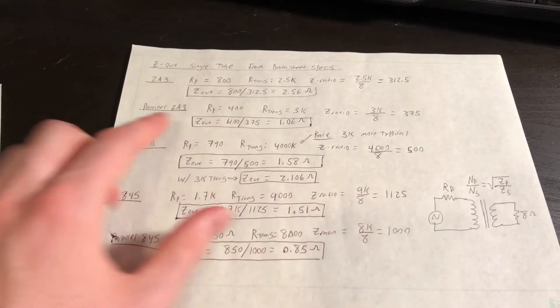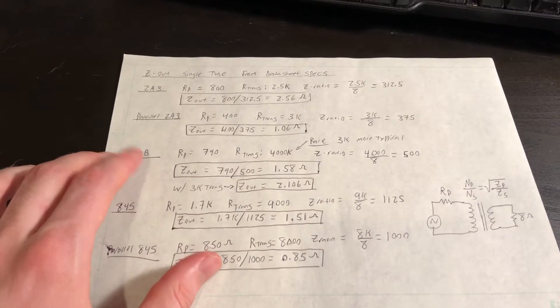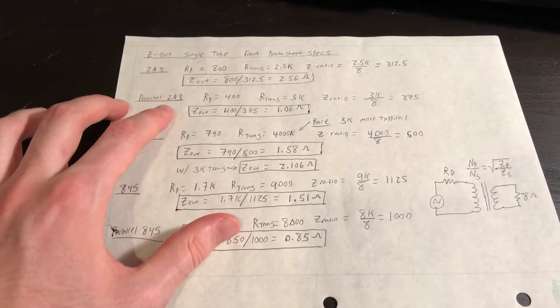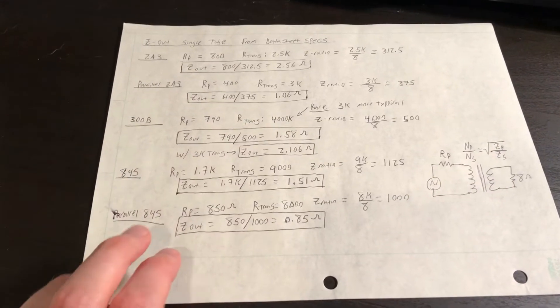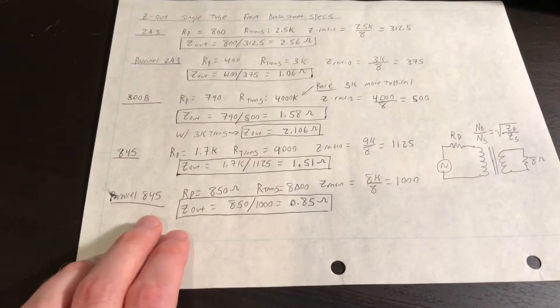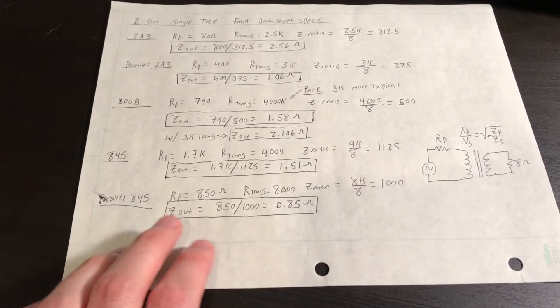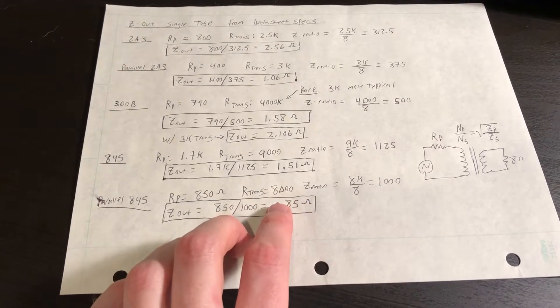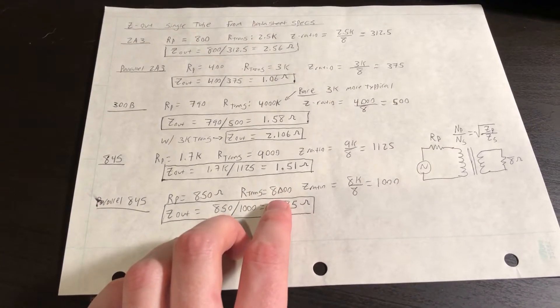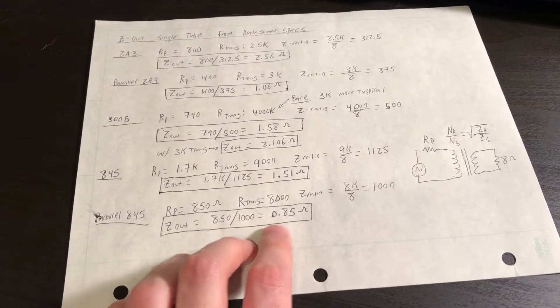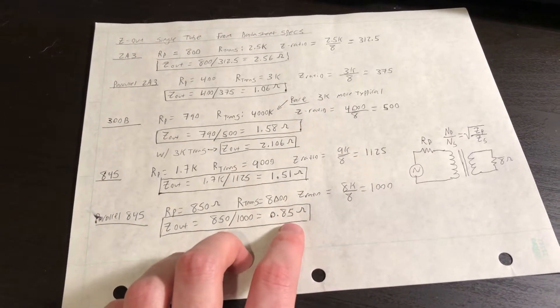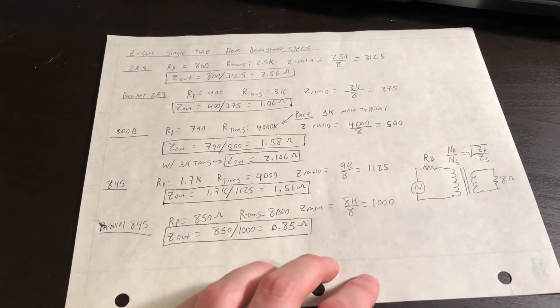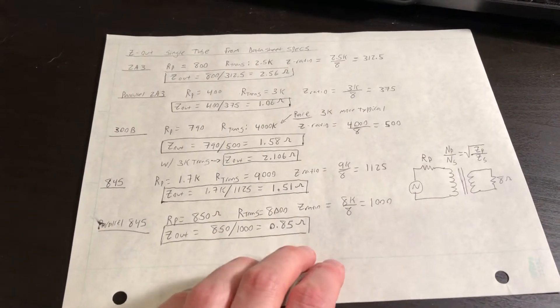So as I mentioned before, instead of doing 300B or a parallel 300B that gives us a bit more power over our parallel 2A3 amplifier, we're going to jump to 845s. So a pair of 845s into an 8K ohm load, which would be our transformer impedance, we should be expecting, at least on paper, less than an ohm of output impedance while delivering 40 watts. So that's the order and that's the goal of this project.